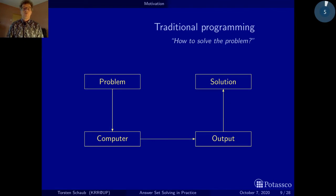Now in traditional programming, what we actually do to achieve this goal is to answer the question how to solve the problem. The how is here the characteristic word. Let's make this precise in this example.